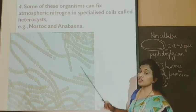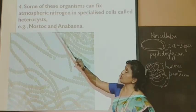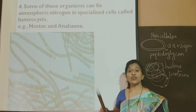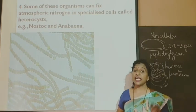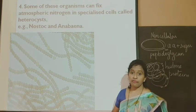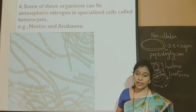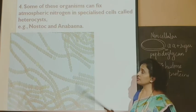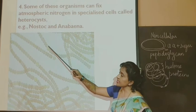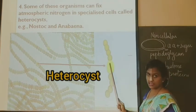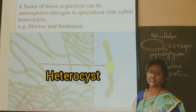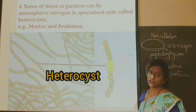Some of these organisms — for example, Nostoc and Anabaena — can fix the atmospheric nitrogen and convert it into other forms, for example ammonia, which is essential to carry out metabolic activities. Specialized cells called heterocysts will help in nitrogen fixation into ammonia.